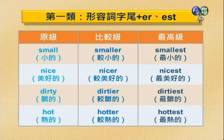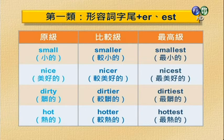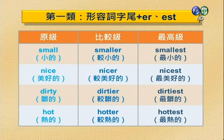第一类是在形容词字尾加-er或-est，分原级、比较级、最高级，譬如：small / smaller / smallest；nice / nicer / nicest；dirty / dirtier / dirtiest；hot / hotter / hottest。